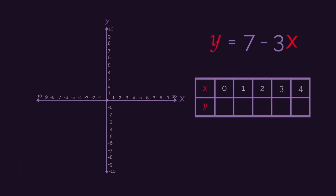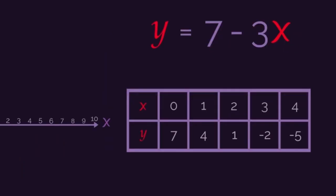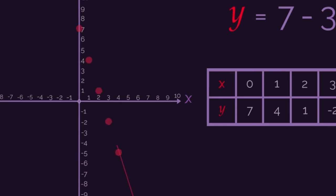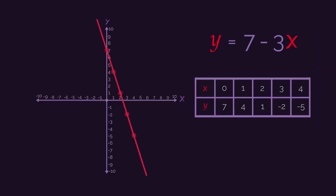Did you get the y values right? 8, 7, 4, 1, negative 2, and negative 5. You should have just substituted in each value of x into y equals 7 minus 3x. So now we have our five coordinates. We can plot them straight onto our graph. And again, join them up with a straight line and label it with its equation.